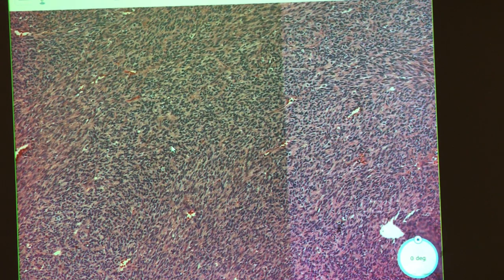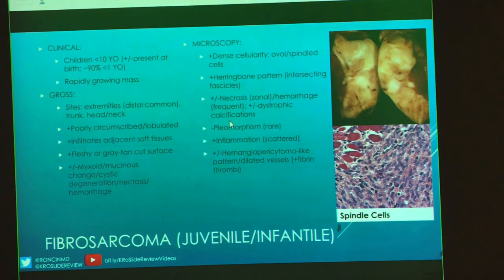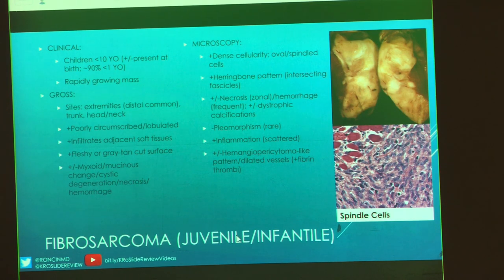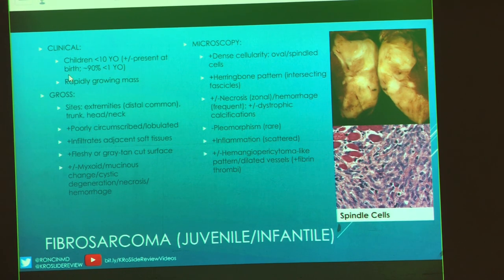So this is a fibrosarcoma. Why sarcoma, since it looks relatively bland? Well, the cellularity is far too much. And as you will see, these lesions tend to be rapidly growing. This is the juvenile or infantile variant of fibrosarcoma. Because it's juvenile or infantile, we are looking at children — young children less than 10 years old. Some of these will even have it present at birth. If you have some sort of tumor in a neonate, this is one of those things to consider. They are rapidly growing.